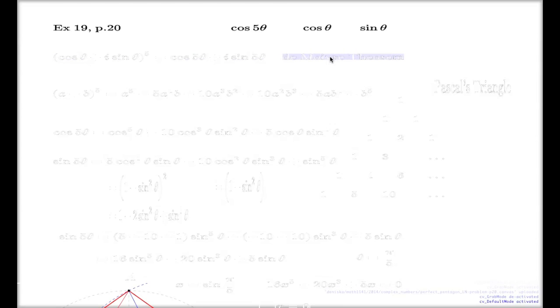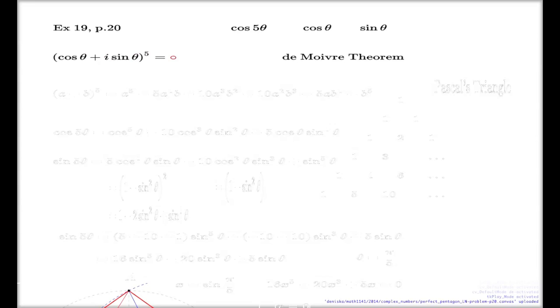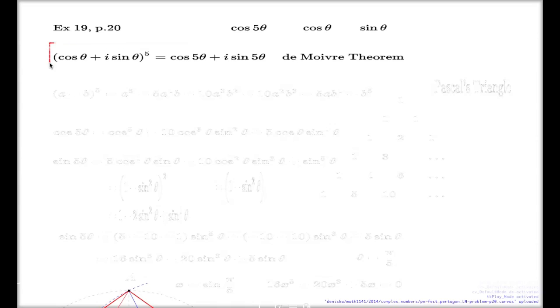The technique is based on our exponential and trigonometric forms and the binomial formula. I will quote the De Moivre theorem for n equals 5. Here's the left hand side and here's the right hand side of the De Moivre theorem. I will do the expansion of this left hand side as a binomial expression. For that I need a Pascal triangle.